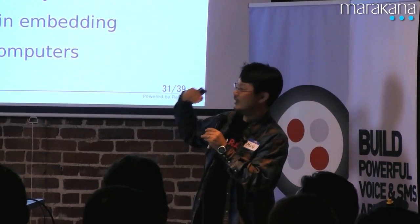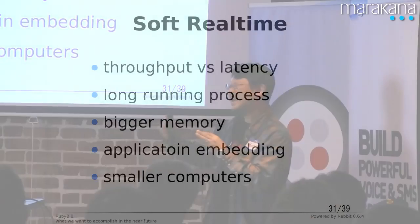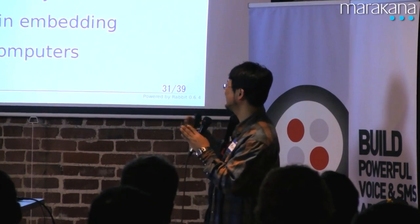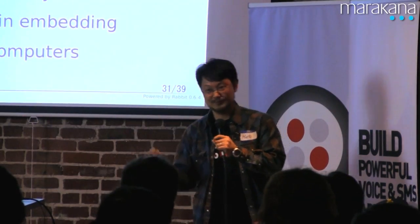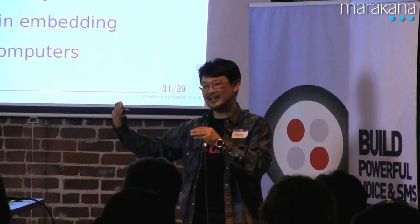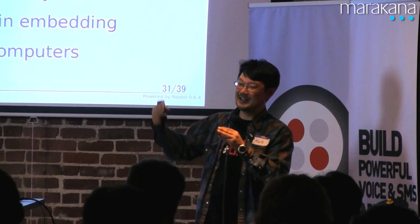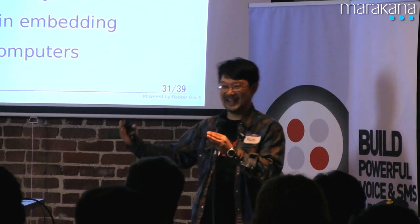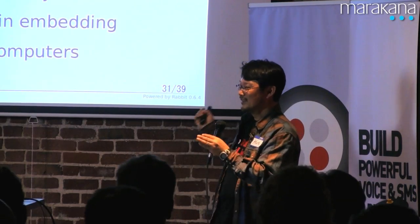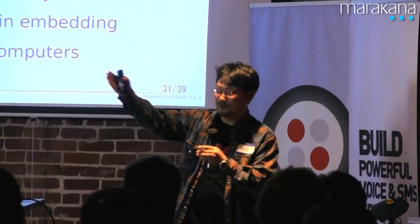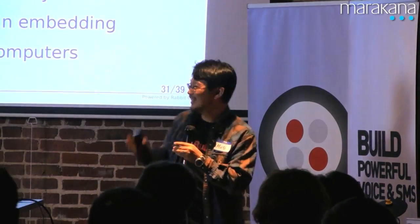In embedded systems we need soft real-time — not hard real-time where every interrupt must be handled within 10 microseconds. Soft real-time is more like a gaming platform: you can wait 100 milliseconds, but you don't want a two-second garbage collection pause in the middle of a shooting game. The enemy goes away and your bullet goes off-course while garbage is being collected — you don't want that. It's a trade-off between throughput and latency. Nowadays technology trends lean toward prioritizing latency, because long-running processes with large memory have lengthy trace-and-sweep garbage collection cycles.